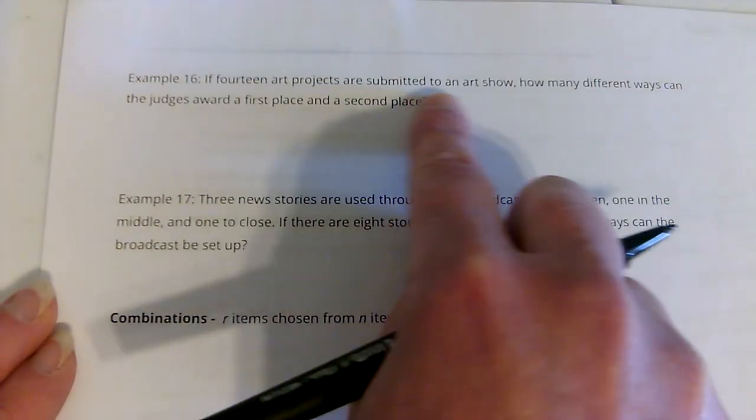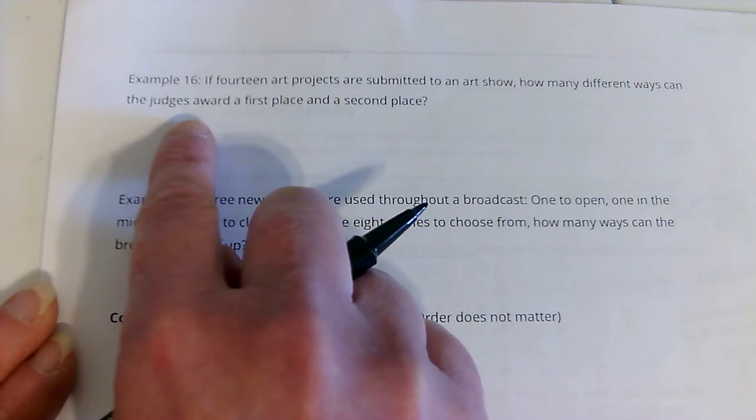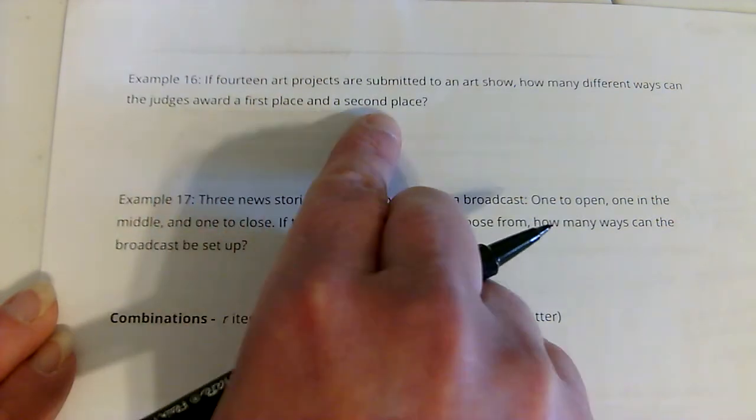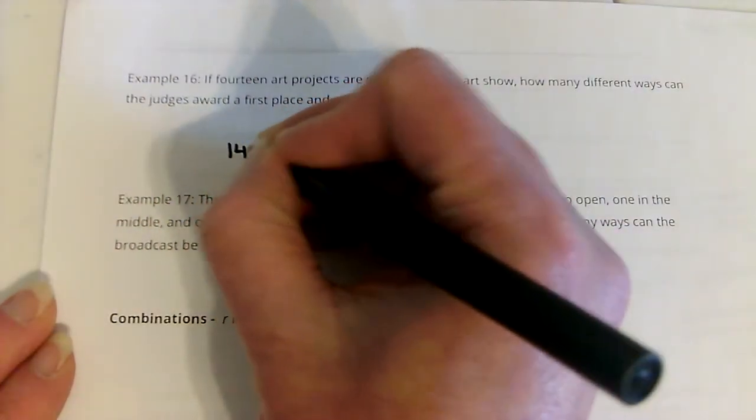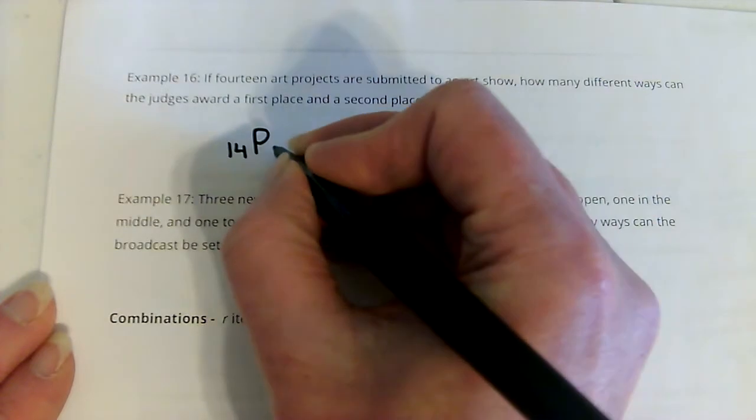If 14 art projects are submitted to an art show, how many different ways can the judges award a first and second place? So, this is 14 pick 2.